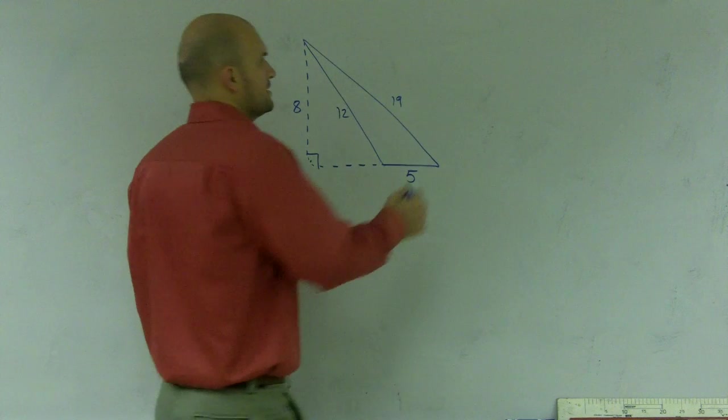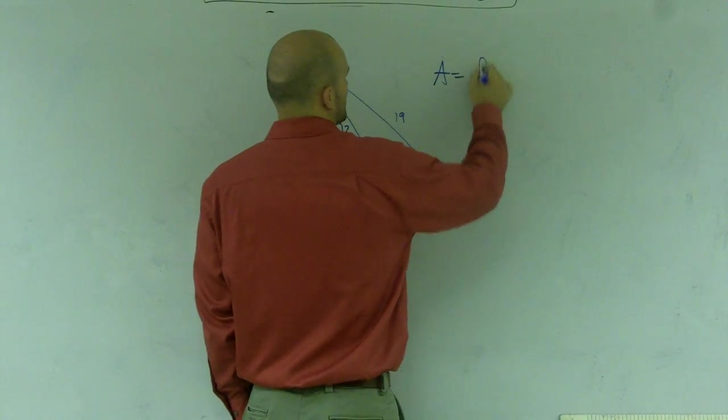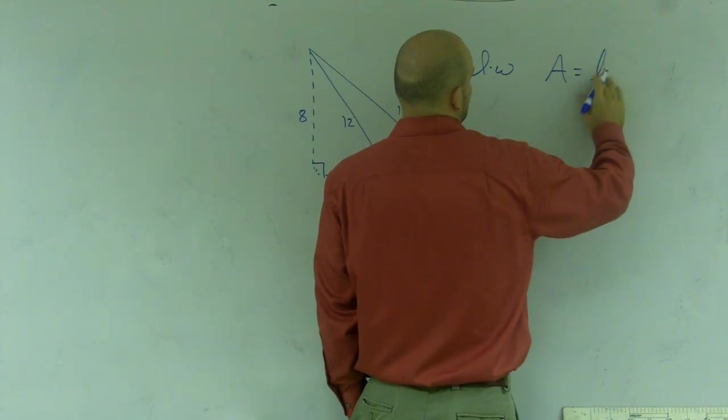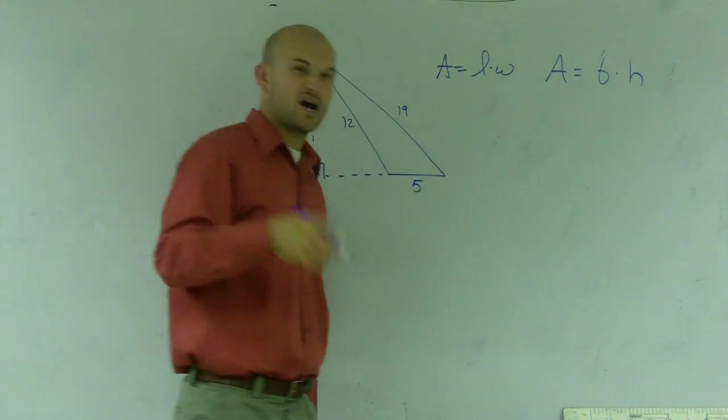Every single time, I almost always get this: area equals length times width, or area equals base times height. And then I say, all right,